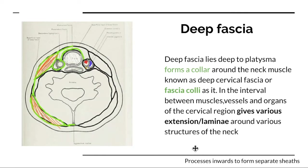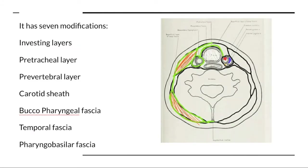The deep fascia has seven modifications: the investing layer, the pre-tracheal layer, the pre-vertebral layer, the carotid sheath, the buccopharyngeal fascia, the temporal fascia, and the pharyngobasilar fascia. The investing layer completely surrounds the others. In the next video, we'll start the discussion on the investing layer of the deep fascia.